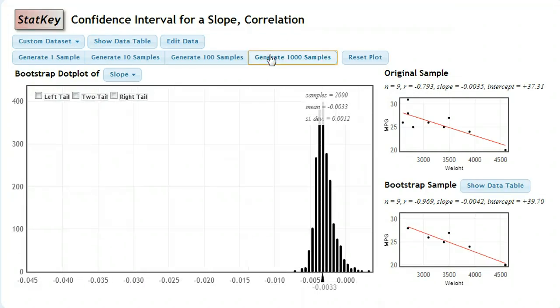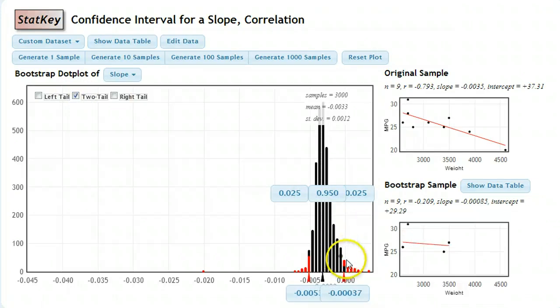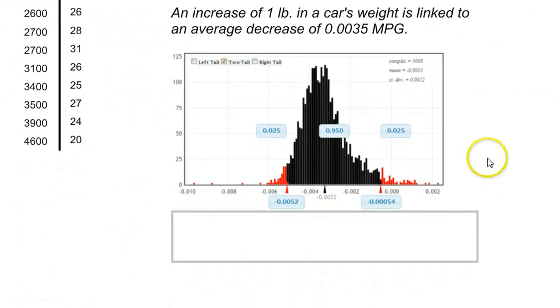And after I generate a few thousand samples here, I'm going to go ahead and look at my middle 95%. I'm getting a 95% confidence interval. I'm going to slip back here into my screen where I can draw on what I came up with.